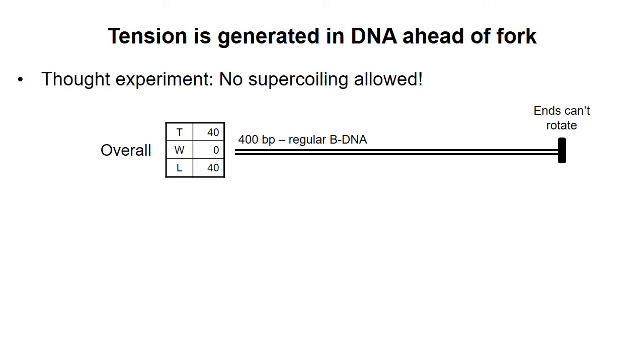Well, to answer this question, let's do a thought experiment in which we have a section of DNA, 400 base pairs in length, that is about to undergo replication. In our thought experiment, the ends of the DNA are not free to rotate, and we're not going to allow supercoiling, at least at first. This will enable us to see how tension accumulates in the DNA.